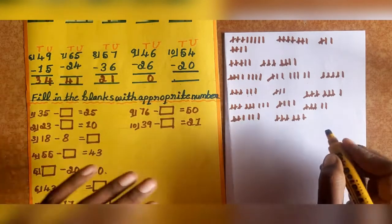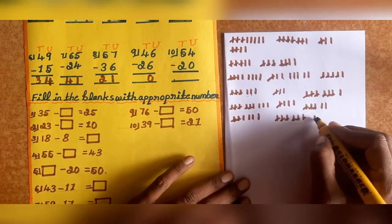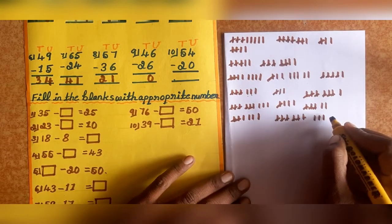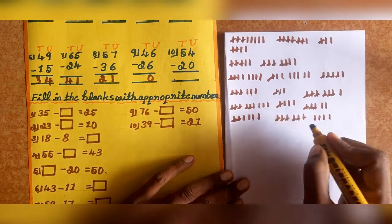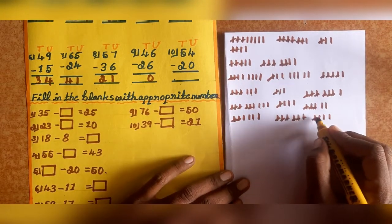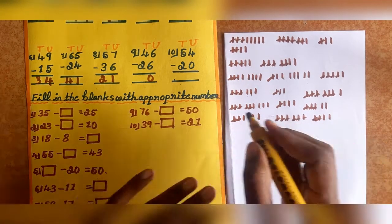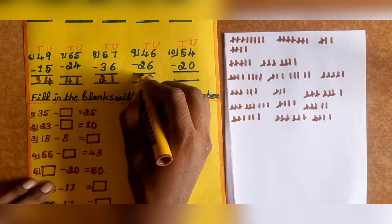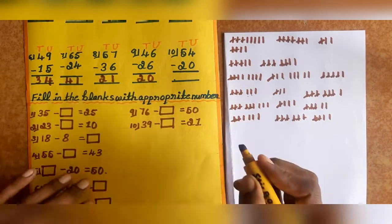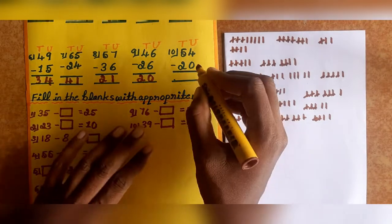Next, 4 minus 2. Draw 4 lines, cancel 2. Balance is 2. So 4 minus 2 equals 2.